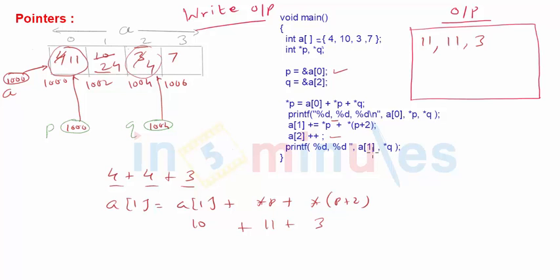Then you are printing what is a[1]? What is a[1]? Obviously 24, so next output will be 24 comma *q. q is 1004, so value at 1004 is now 4. So they can ask you some mixed question of arrays and pointers.